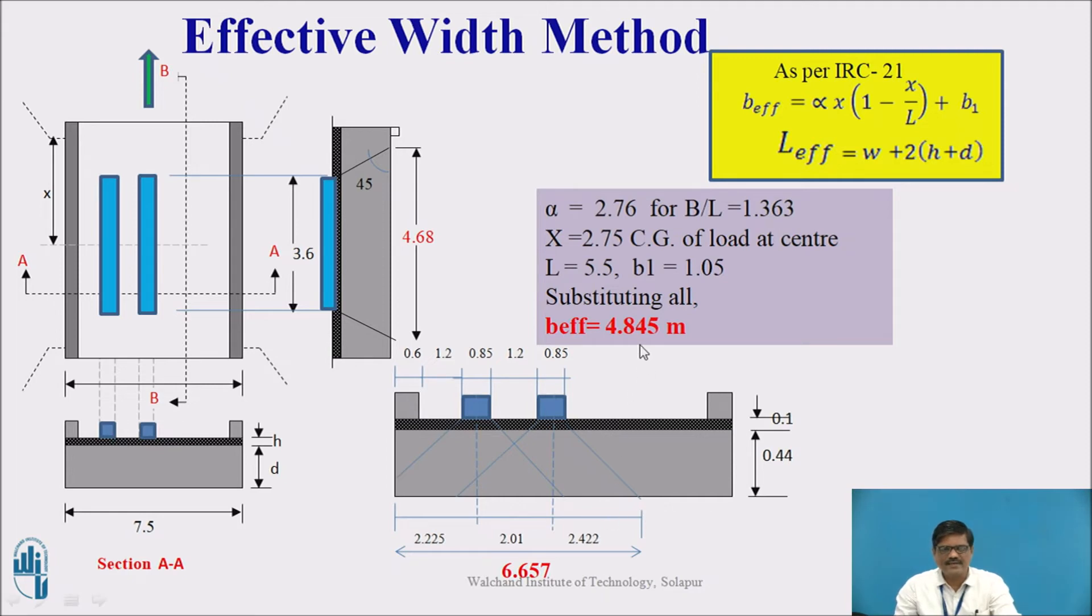Of course, this particular 4.845 meter is the B-effective of one wheel load. We have another wheel load and this wheel load will also have the same B-effective. There will be an overlapping of the B-effective. Therefore, we have to calculate the total B-effective including the overlapping. On the left-hand side, if I consider the first wheel load, we have a space restriction. The complete dispersion is not possible to take place here because of less space.